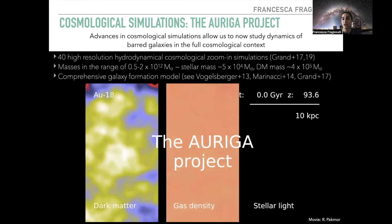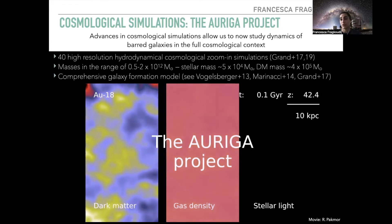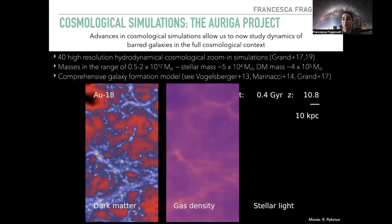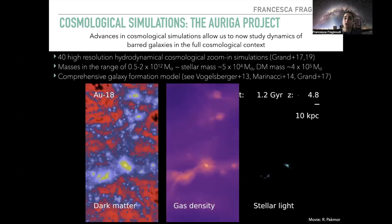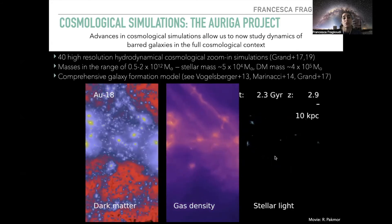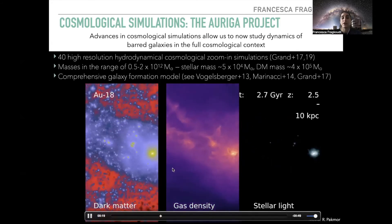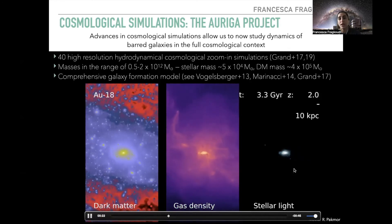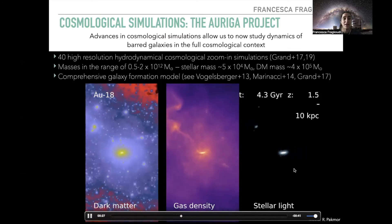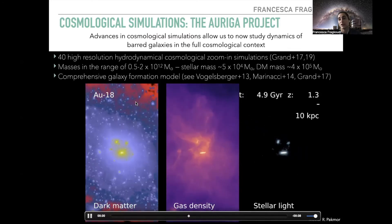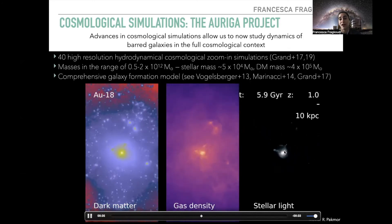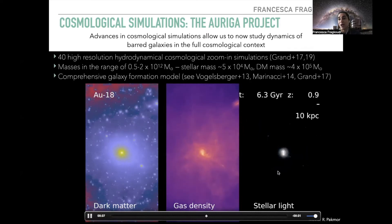In this talk, I'm going to be looking at the Auriga simulation — a suite of 40 high-resolution cosmological zoom-in simulations that have a halo mass in the range of the mass of the Milky Way. They have a comprehensive galaxy formation and evolution model which includes star formation, stellar feedback, and feedback from AGN, and in which we can trace dark matter, gas density, and stellar distribution simultaneously. All of these galaxies form disk-dominated systems by redshift zero. For example, Auriga 18, which I'll come back to later, already has a nice bar galaxy formed by redshift one.